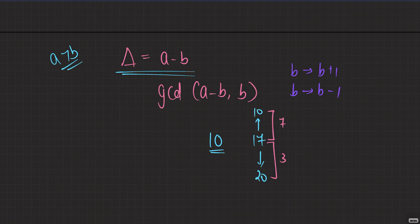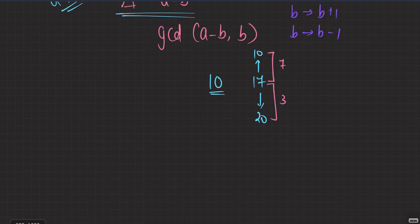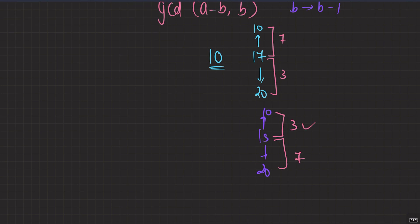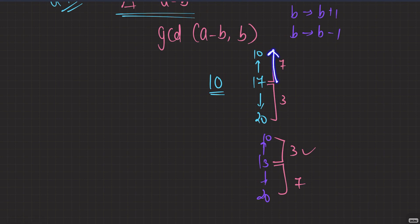Another example: delta = 10, b = 13. Nearest multiples of 10 are 10 (distance 3) and 20 (distance 7). Minimum is 3. How do we compute this? The distance to the previous multiple is b mod delta (= 13 mod 10 = 3), and the distance to the next multiple is delta − (b mod delta) (= 10 − 3 = 7). Minimum of these two is your answer.